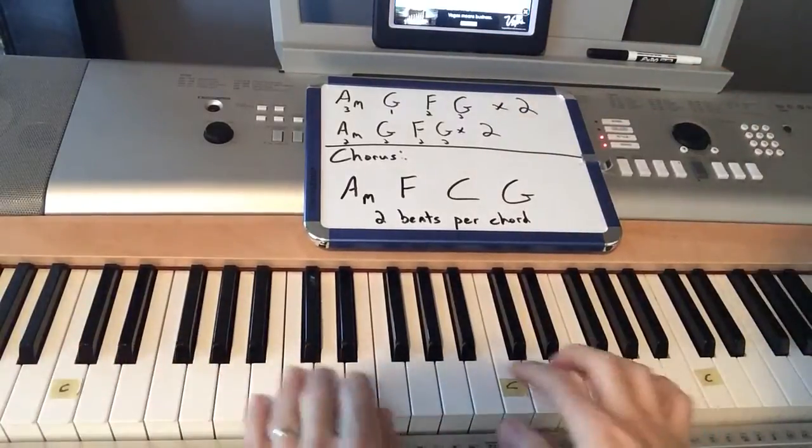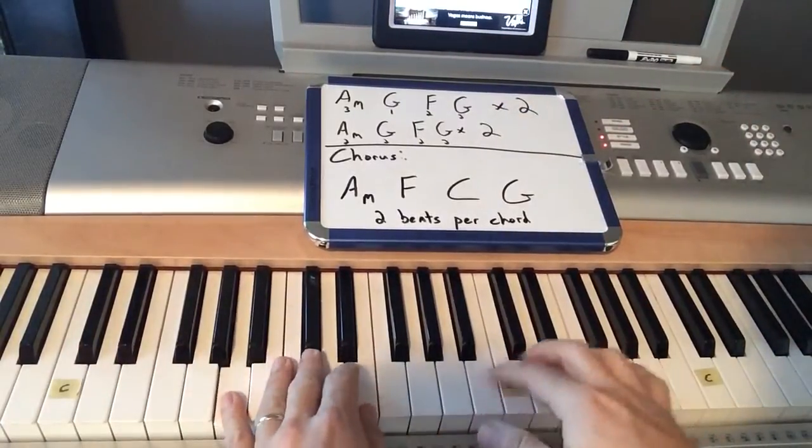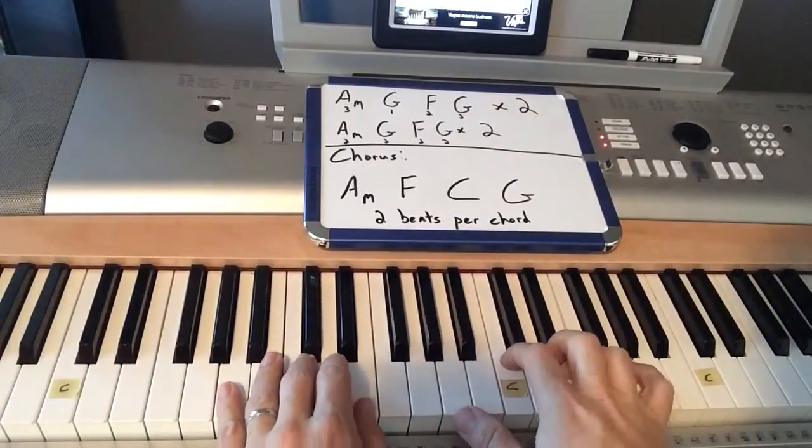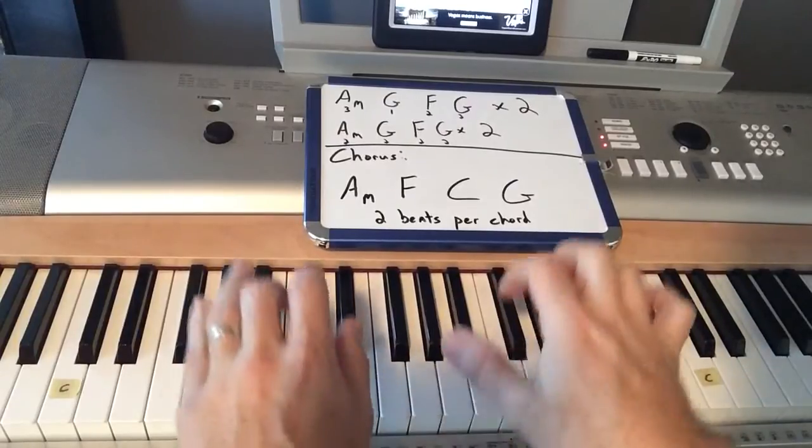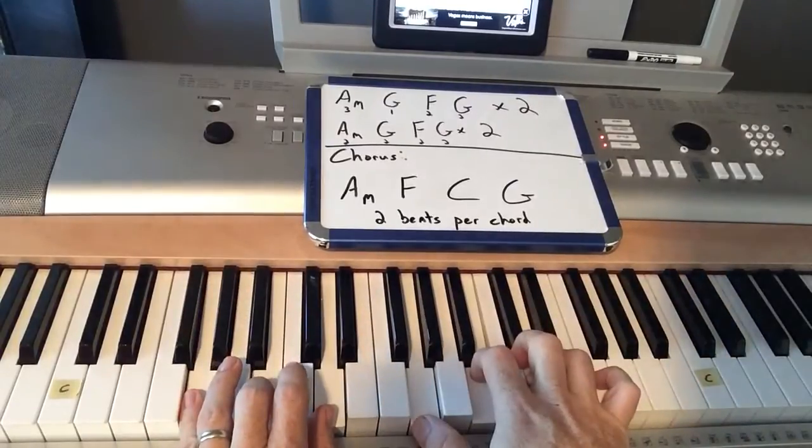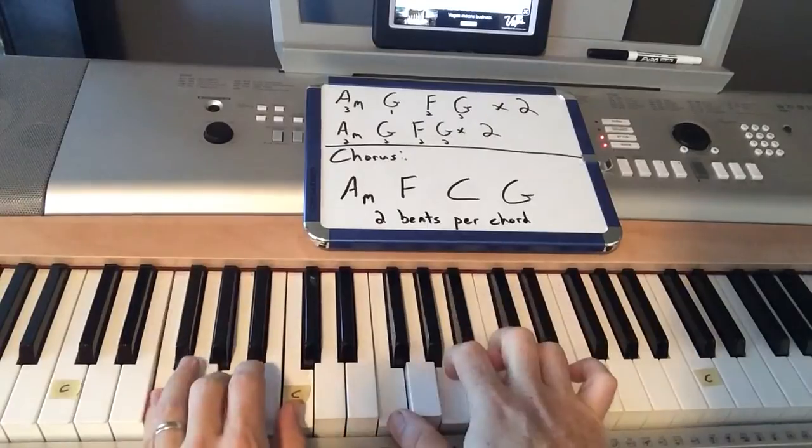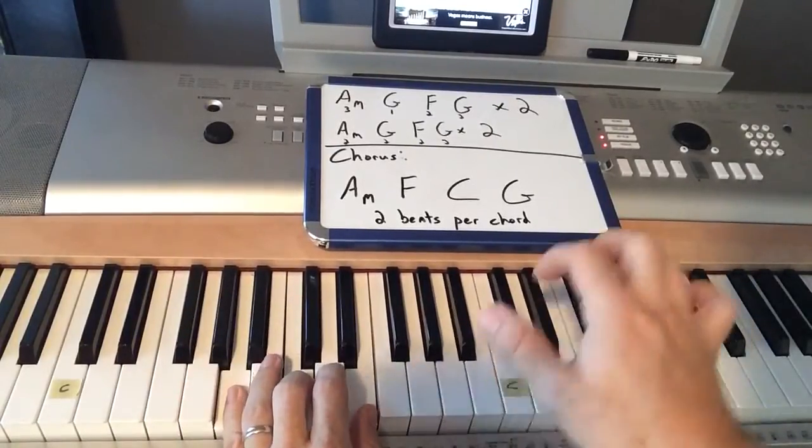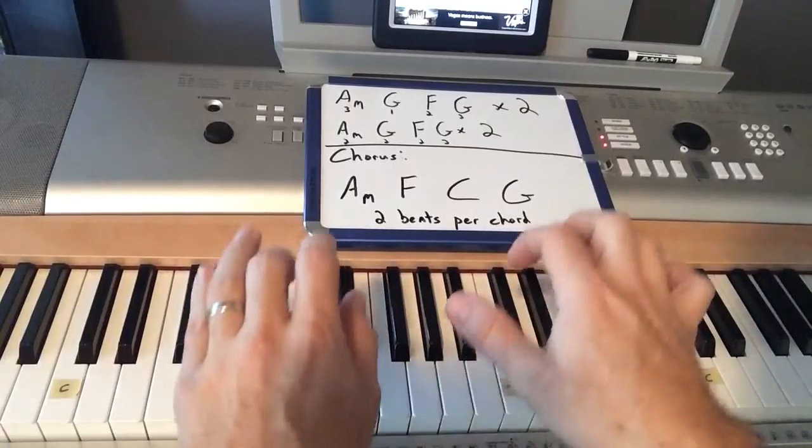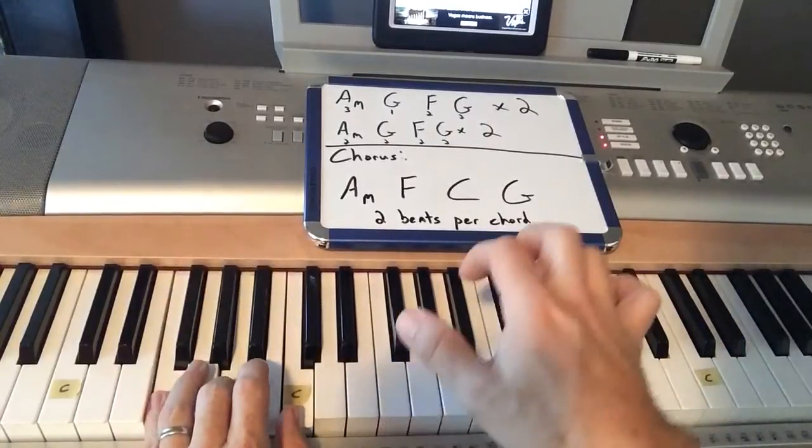So again with the chorus, anytime you're on a three count, you go A minor. Two. Three. And then go both G's together since it's just one. Then F. Right. Both. Right. One. Two. Three. G. F. Right.